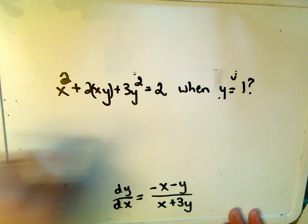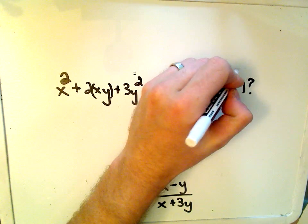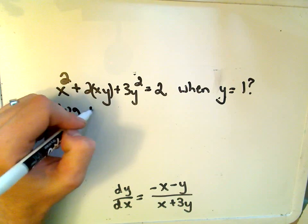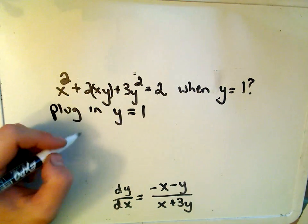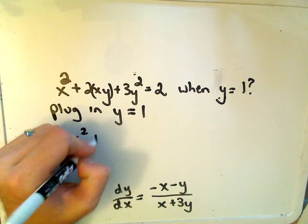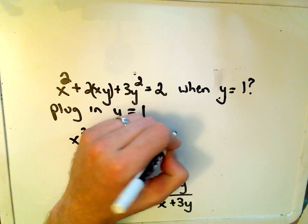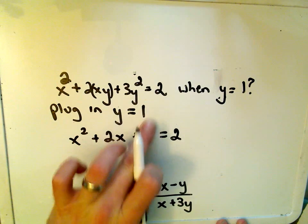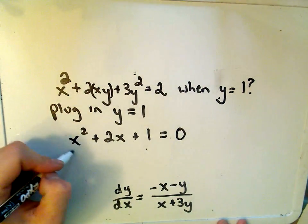So if we substitute in, if we plug in y equals 1, we'll get x squared plus 2x plus 3 equals 2. Well, this is just a quadratic, subtract 2 from both sides, we'll get x squared plus 2x plus 1 equals 0.